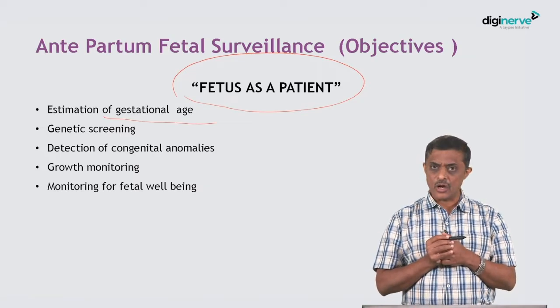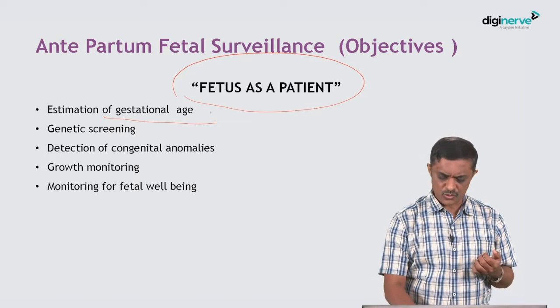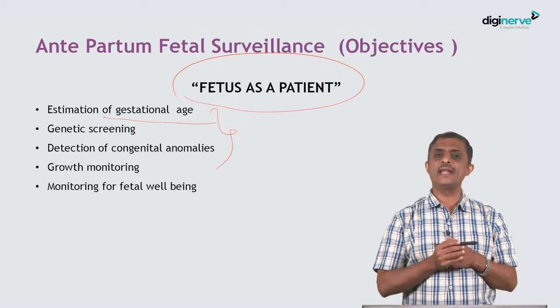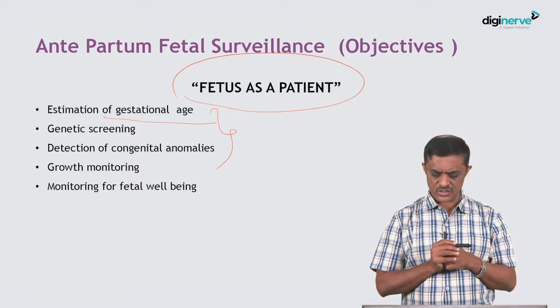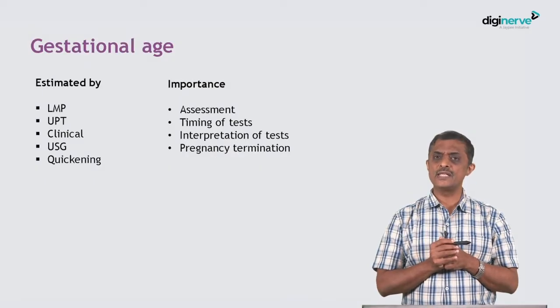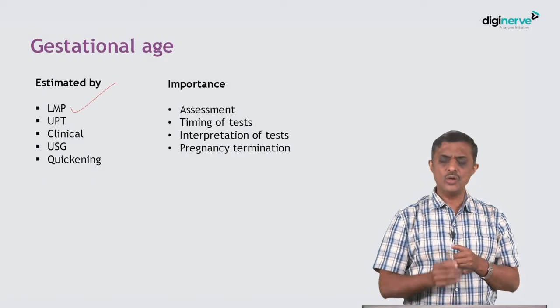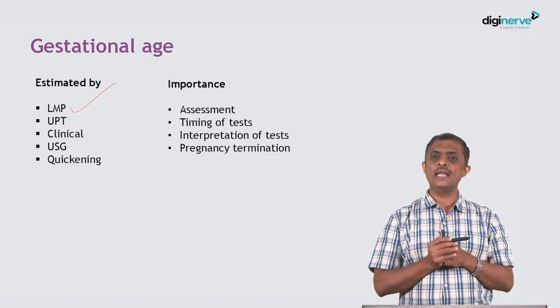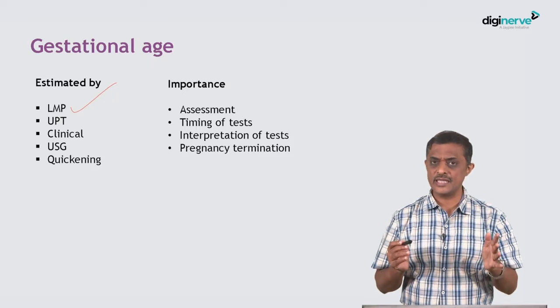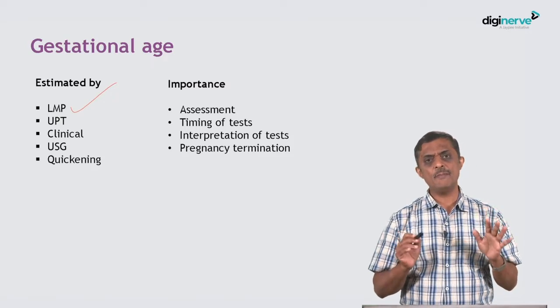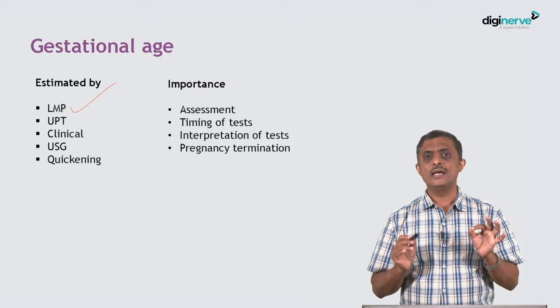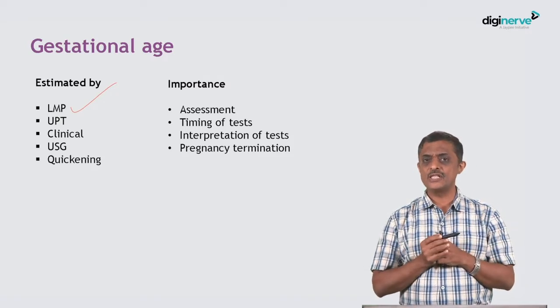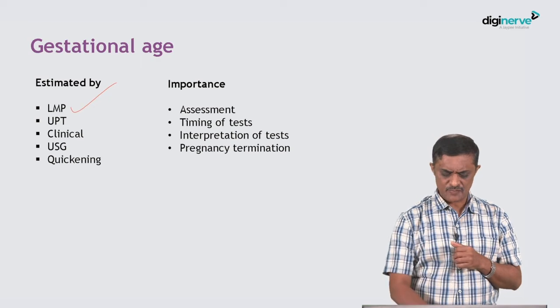Detection of anomalies is a key objective. Most of this can happen with ultrasound examination, along with growth monitoring and well-being monitoring. For gestational age, first look at the LMP. If the woman has regular cycles, LMP could be a reasonable means to calculate the gestational age.